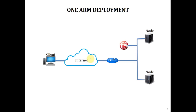The first one is one ARM deployment. Imagine we don't have F5 right now. We have client, internet, router, and just one node. Client goes to the router, router forwards it to the node — everything is working fine. But now we've realized this node, running a service on port 80, is getting a lot of traffic which is affecting performance. So we want to load balance. We added another node and also added an F5 device to share the load among these nodes.